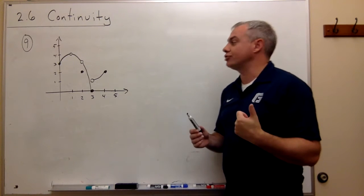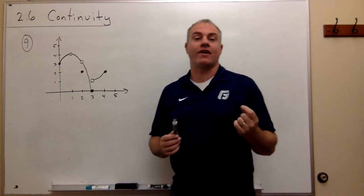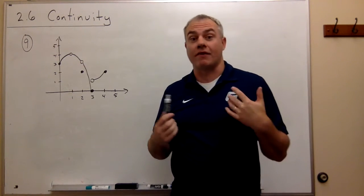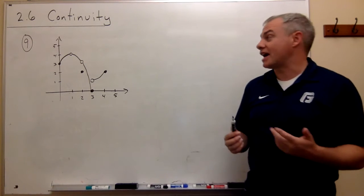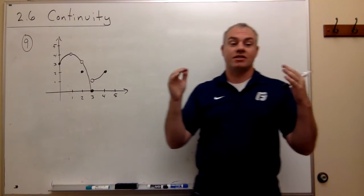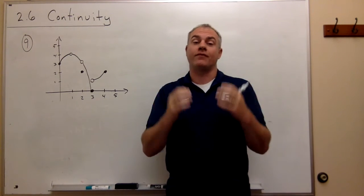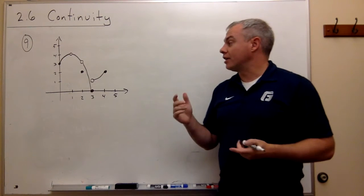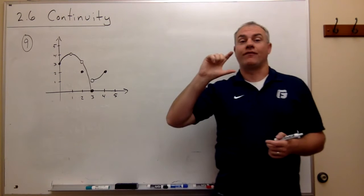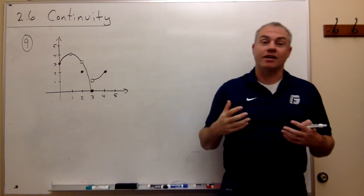Number one, there needs to be a functional value at that value of x. So for a given value of x, if it's going to be continuous at the point, it certainly needs to have a functional value there. Second, it needs to have a limit value at that point — as x gets close to that point, the function should be going somewhere. Third, those two values need to agree — the functional value and the limit value need to be the same.